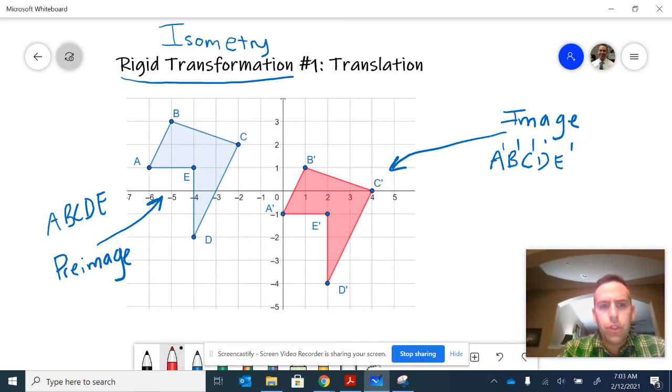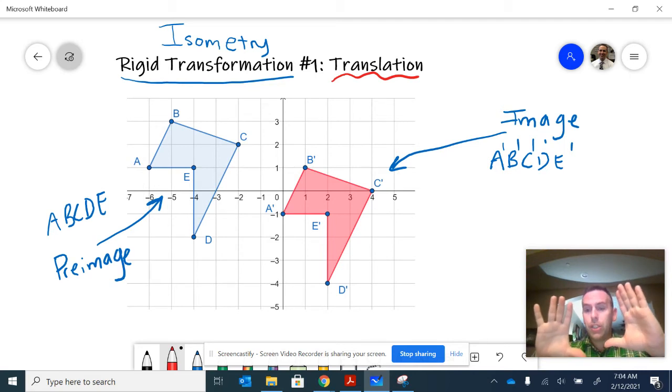So our first rigid transformation is called a translation. This means to move the image about the plane without doing any rotation, without doing any shrinking or growing. So it preserves the size and it preserves its orientation, it just shifts it.